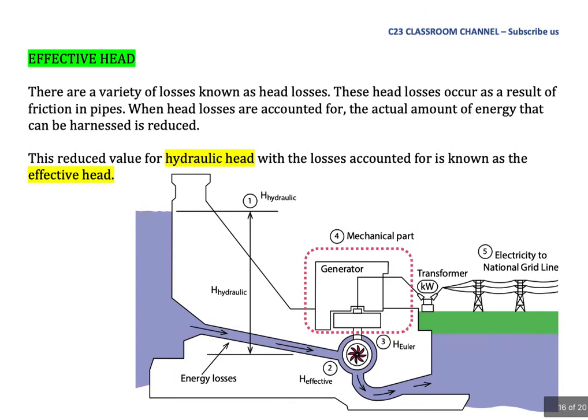Effective head. There are a variety of losses known as head losses. These head losses occur as a result of friction in pipes. When head losses are accounted for, the actual amount of energy that can be harnessed is reduced. This reduced value for hydraulic head with the losses accounted for is known as the effective head.